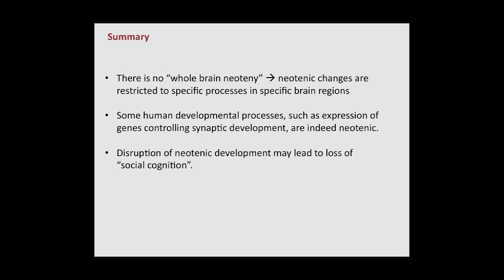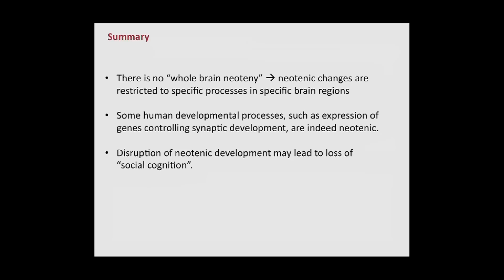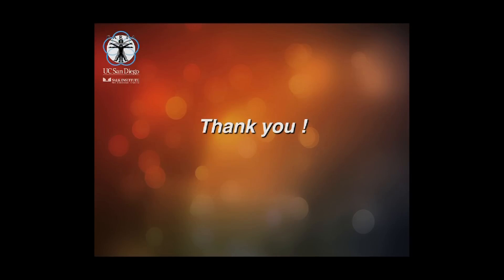For the summary take-home messages: there is no whole-brain neoteny. Neotenic changes are restricted to specific processes in specific brain regions. If we look at all genes expressed in the brain, then we don't see any neotenic shift. But for particular processes — such as genes controlling synaptic development — we indeed see a neotenic shift. And disruption of neotenic development may lead to loss of social cognition, which we saw in the case of autism. That's all — thank you very much.